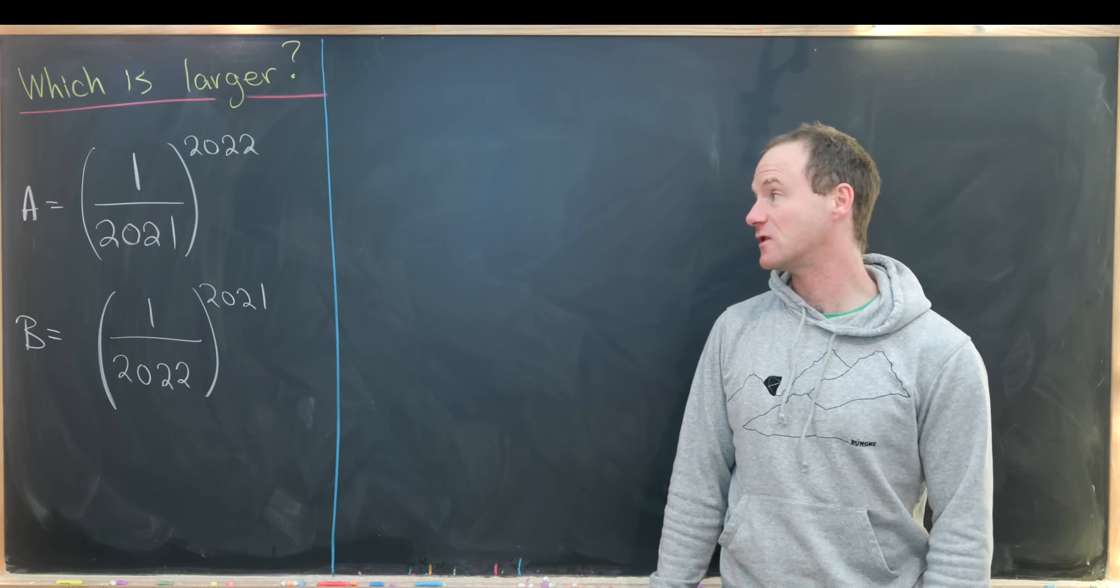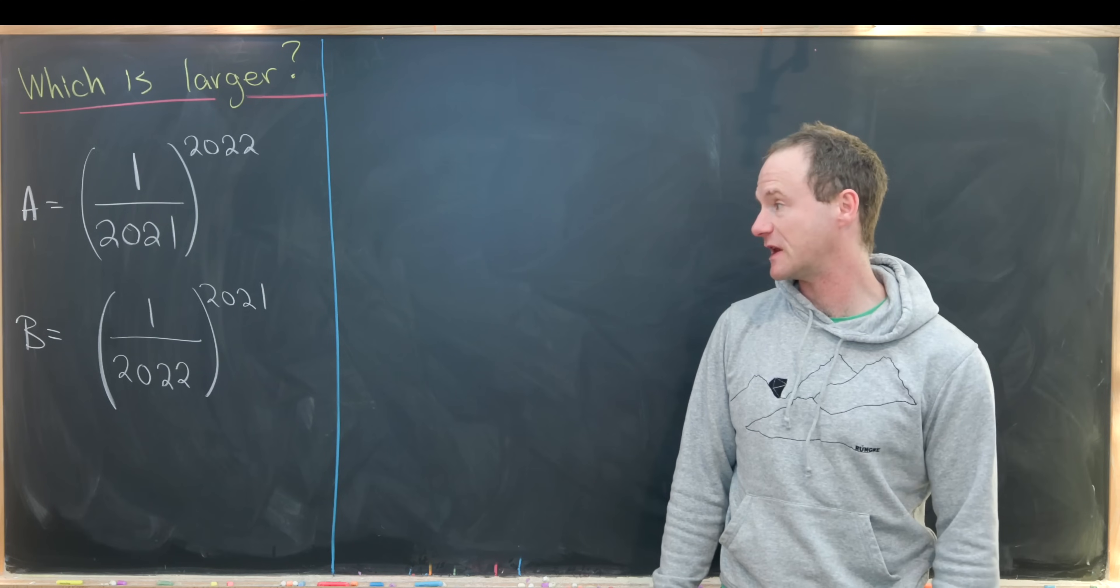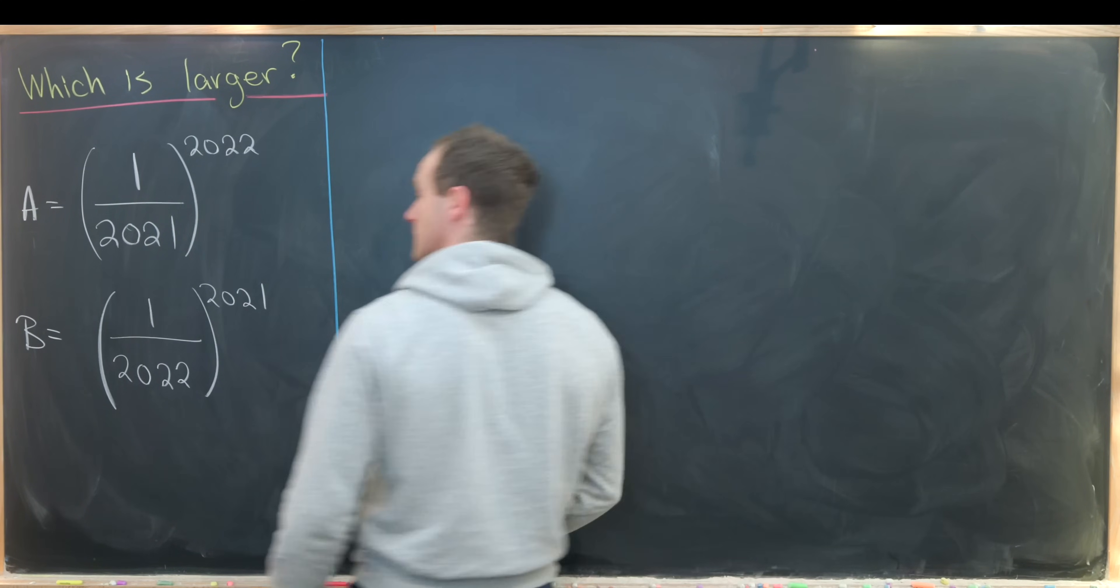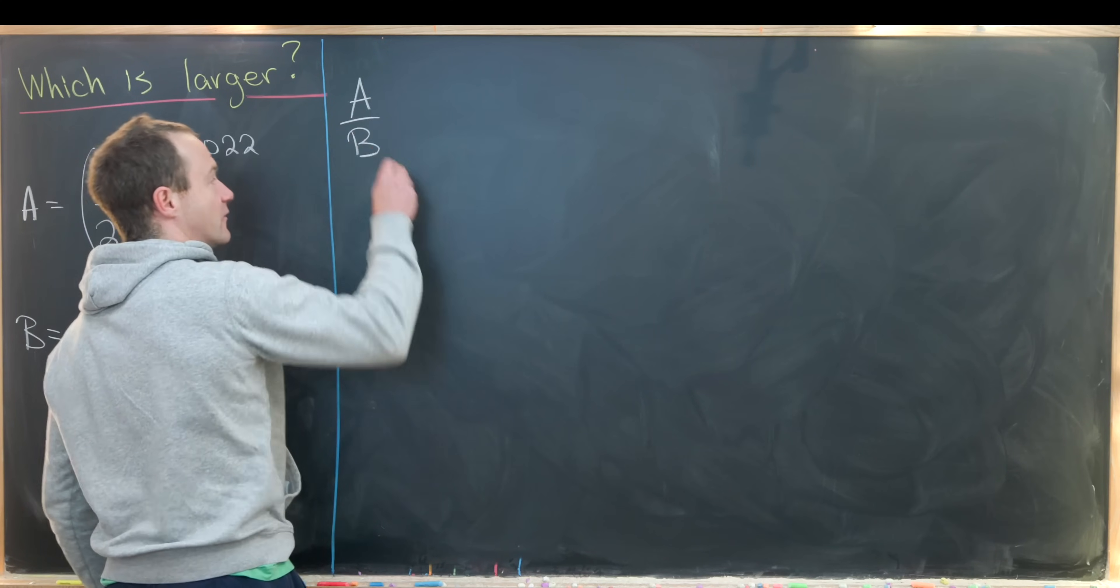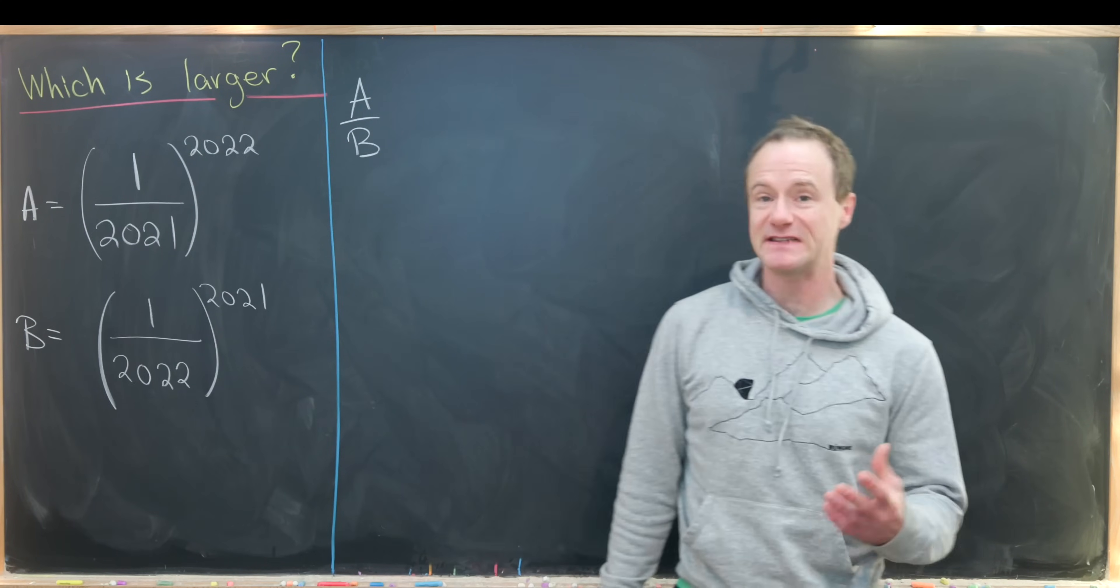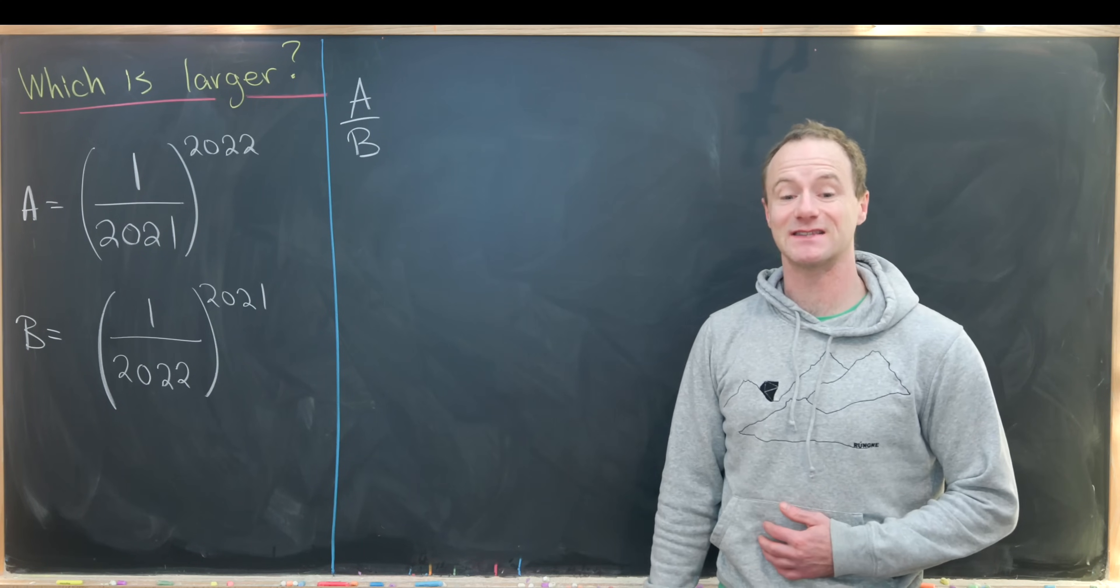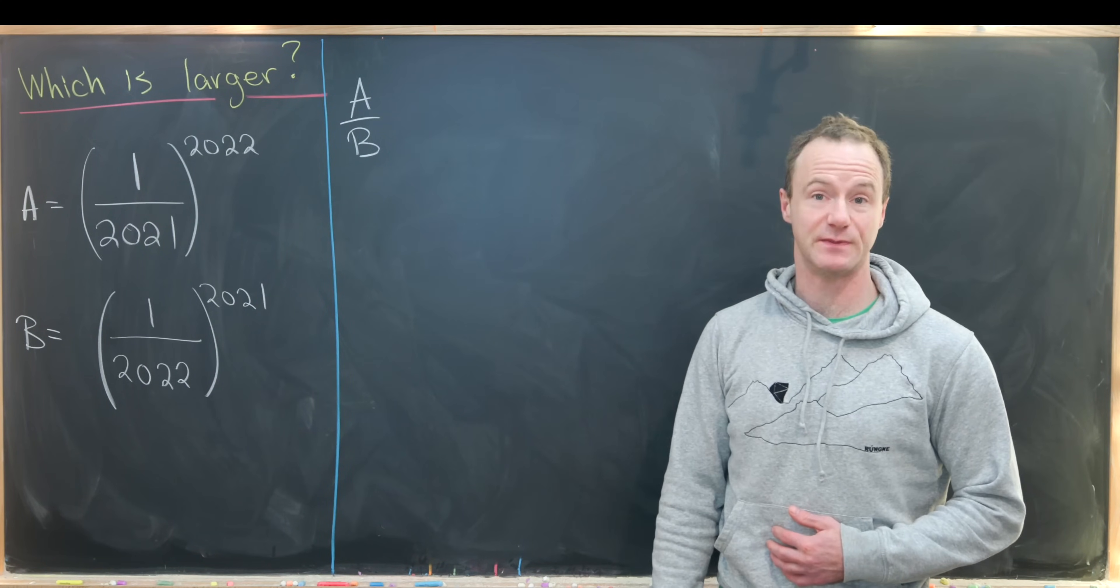We'll compare these by looking at their quotient and determining if their quotient is bigger than or less than 1. We'll look at it in the form of a over b. So if this is bigger than 1 then a is bigger than b, but if this is less than 1 then b is bigger than a.